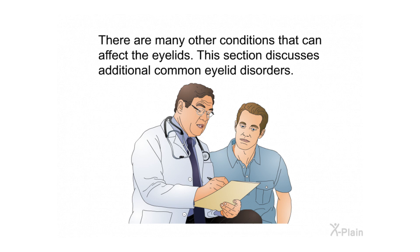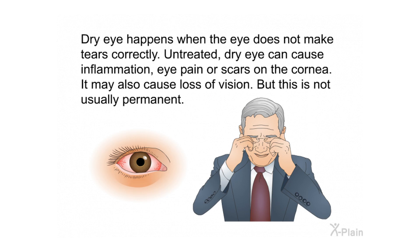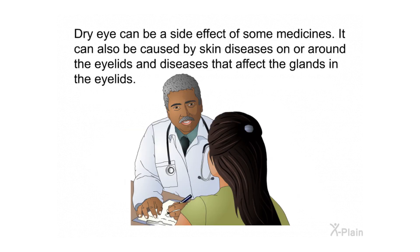Other Eyelid Disorders. There are many other conditions that can affect the eyelids. Dry eye happens when the eye does not make tears correctly. Untreated dry eye can cause inflammation, eye pain, or scars on the cornea. It may also cause loss of vision, though this is not usually permanent. Dry eye can be a side effect of some medicines, or caused by skin diseases on or around the eyelids, and diseases that affect the glands in the eyelids.